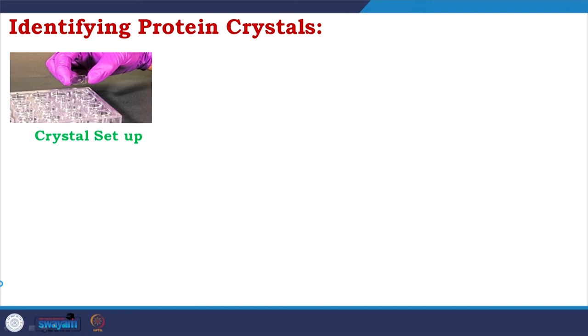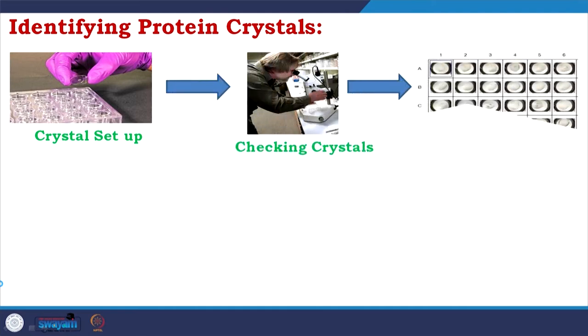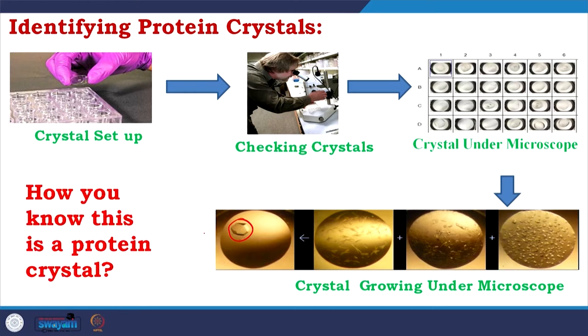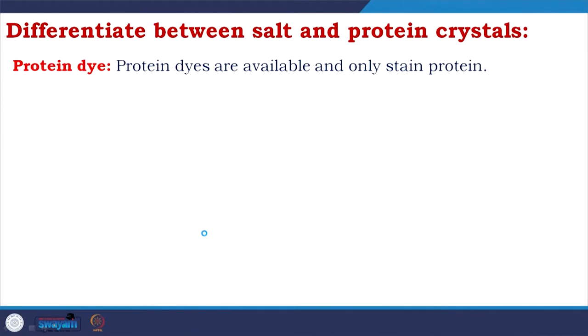How to check the protein crystals? First you do the setup, you check crystals, then you go under the microscope. You see crystals forming from smaller to bigger and you get a single crystal — that is what our dream is. And how do you know that this is a protein crystal? If you see your crystal growing through that journey, then you could say it is a protein crystal most of the time. But normally you need to differentiate: is it a protein crystal or a salt crystal? There are protein dyes available that only stain protein. So if you put that staining and it stains the crystal, it is a protein crystal; if it does not stain, it is a salt crystal.